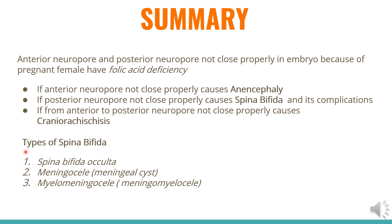The types of spina bifida are: first, spina bifida occulta; second, meningocele, also known as meningocyst; and third, myelomeningocele, also known as meningomyelocele. Thanks for watching. If you like this video and want more lectures like this, comment below, and don't forget to subscribe and share with your friends.